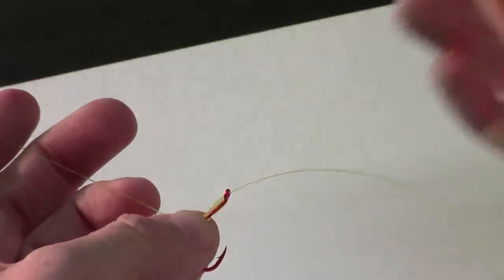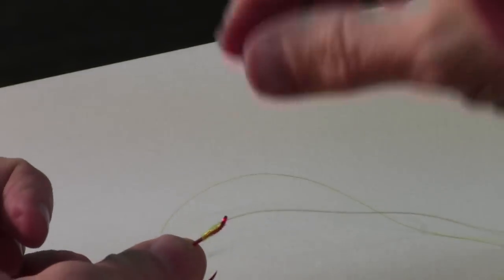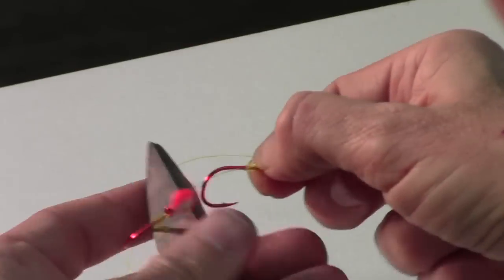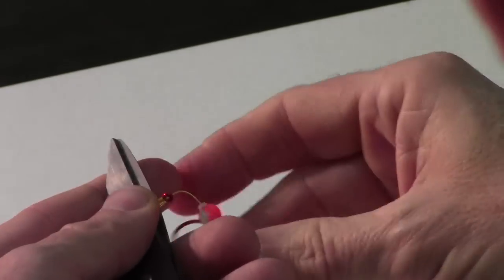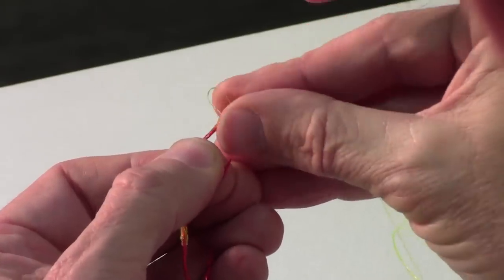Once again I do the transfer and I'm going to pull this through and again wet that a little bit. I'm going to push my scissors, give it a little cinch, not too hard because you can actually break the line if you do it too hard. But there you go. Now you've got an egg loop on here too.